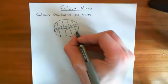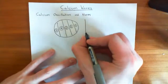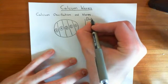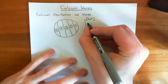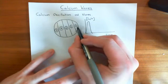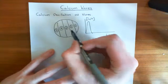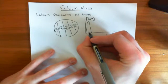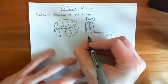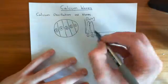A calcium wave means that initially calcium is going to go up in region one. If we plot the calcium concentration in the cytoplasm versus time, in region one calcium is going to go up and then come back down again. The transient calcium rise in region one is then going to trigger calcium to go up in region two, so you'll get a delayed but similar spike there.